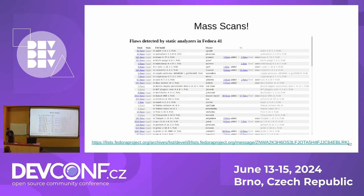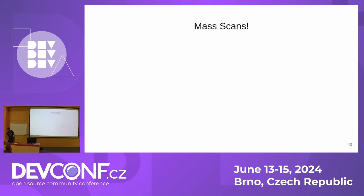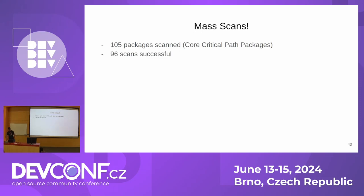The first mass scan was performed in April this year. The report was shared with the community on Fedora Devel. We chose close to 100 packages from the core critical path packages list. 96 scans were successful — some failed due to package build failures, not scan failures. We identified more than 14,000 defects. Not all are definite bugs, but some may be real bugs or even security issues. Please look at the report carefully. There will be more scans coming in the future based on our agreement with the Fedora team.